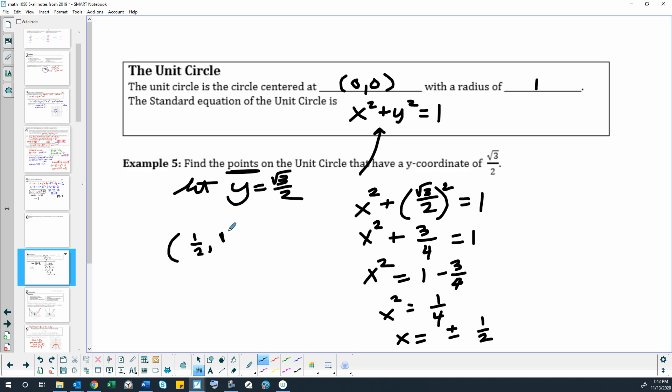In fact, let's write them this way. 1 half, square root of 3 over 2. And then negative 1 half, square root of 3 over 2.